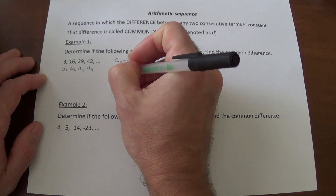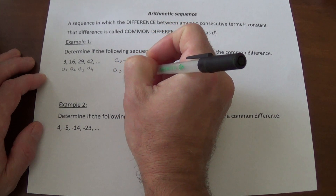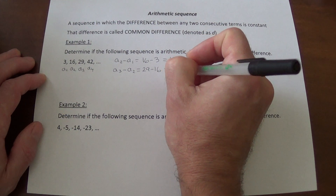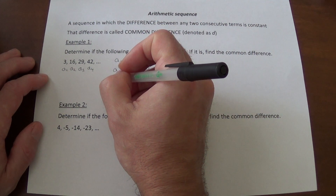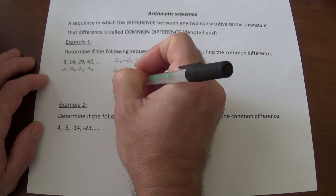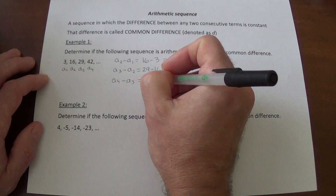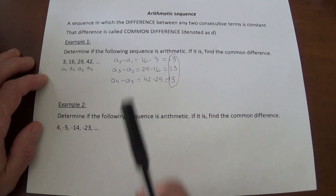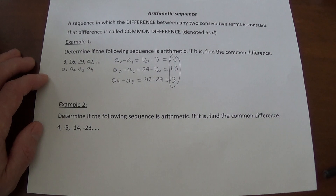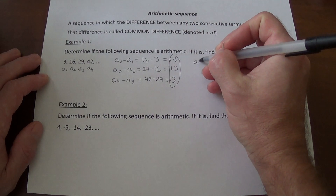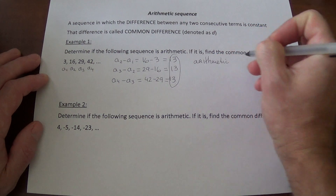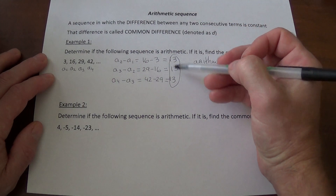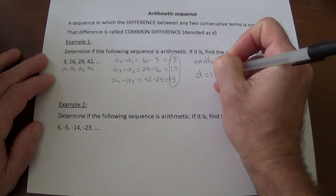Then we take a look at the difference between a3 and a2, which is the third term minus the second term — that's 29 minus 16, which is also 13. Finally, the fourth term minus the third term is 42 minus 29, which is also 13. So for all these differences we got 13. Since the difference remains the same, we can conclude that this is an arithmetic sequence, and the common difference is 13.